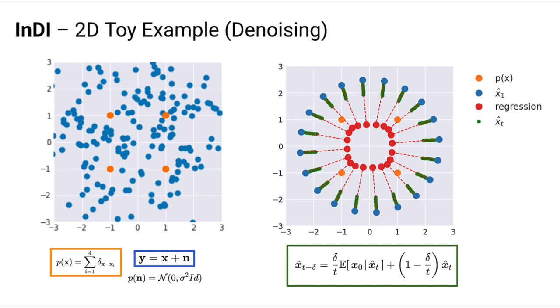If we directly try to minimize the reconstruction error, the best we can do is a posterior mean, which leads to the red dot estimation. As you can see, the red dots are kind of out of the data manifold. This is a visualization of the regression to the mean.